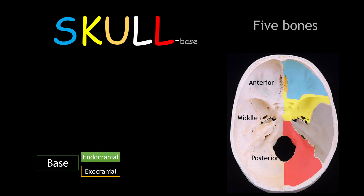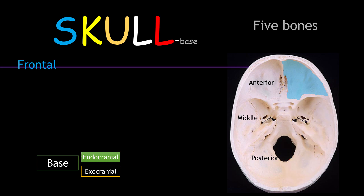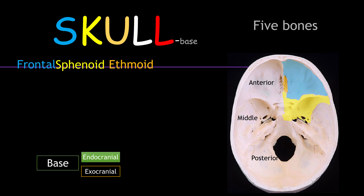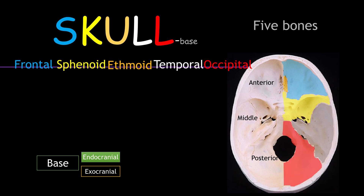As mentioned earlier, five bones make up the skull base, and here is a clear illustration showing these bones. Highlighted in blue is the frontal bone, in yellow is the sphenoid bone, in orange is the ethmoid bone, in gray is the temporal bone, and in red is the occipital bone.